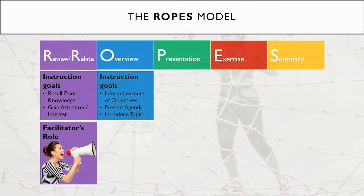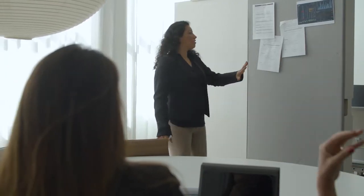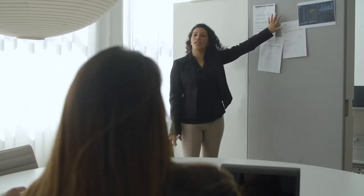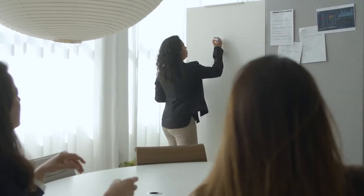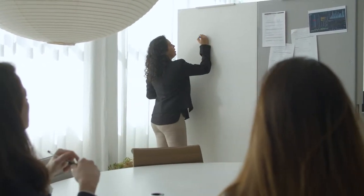The second phase is Overview. The goal of this phase is to inform learners of learning objectives. You'll also share a schedule, agenda, or outline of the class so they know what to expect. When learners know what they're about to do, it can help reduce anxiety which helps them learn better.